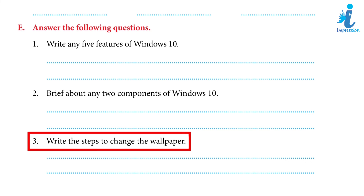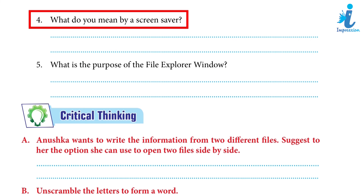Write the steps to change the wallpaper: Go to Start > Settings > Personalization > Background. In the list next to Personalize your background, select Pictures, Solid Color, or Slideshow. Change wallpaper with pictures on the desktop or download pictures online. What do you mean by a screensaver? A screensaver is computer software that may be set to start when the user is inactive for a certain amount of time. When you leave your computer, it was originally intended to protect older monitors from harm, but is now used to stop users from accessing desktop material while they are away.